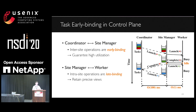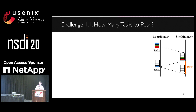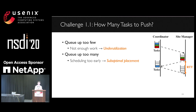Meanwhile, the coordinator can push a new task to the site manager. This way, coordinations between the coordinator and site managers are pipelined with task execution on the worker to guarantee high utilization. But on the other hand, task scheduling within a site is still late-binding because we want to retain a precise view of resource status. This early binding of tasks will still introduce new challenges. The first challenge is to decide how many tasks to push, which outlines a trade-off between utilization and scheduling quality. If we queue up too few tasks, there is underutilization of workers. However, if we queue up too many, lots of tasks are bound to a particular site too early, leading to sub-optimal task placement.